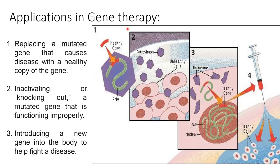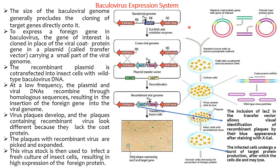By removing the viral protein coating genes, we can use the retrovirus for gene therapy. For the baculovirus expression system: the size of the baculovirus generally precludes cloning a target gene directly into it, so the gene of interest is cloned in place of the viral coat protein gene in a plasmid called the transfer vector, which carries a small part of the viral genome. The recombinant plasmid is co-transfected into insect cells with wild-type baculovirus DNA.